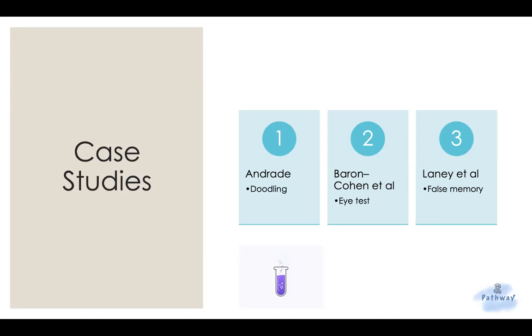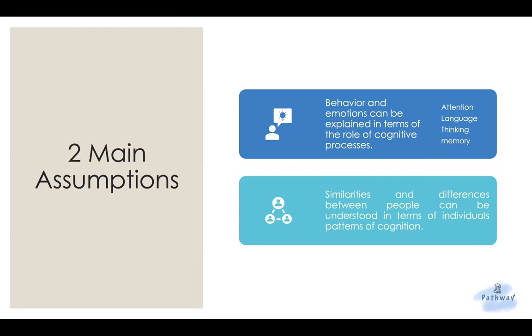It's not that bad. I'll make it really simple. So the two main assumptions that you are expected to know: One, behavior and emotions can be explained in terms of the role of cognitive processes, such as attention, language, thinking, and memory.